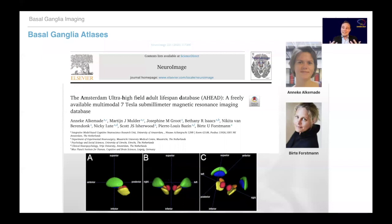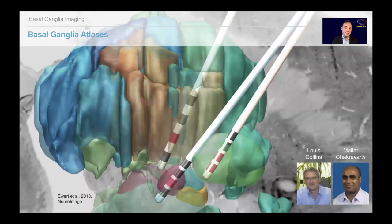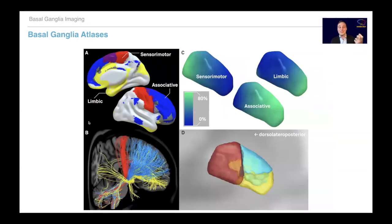Atlases and atlas resources are yet another way to study the basal ganglia. Since we cannot image them precisely in vivo, we can use atlas resources to define them. The team by Bita Forstmann pioneered this approach. We also created an atlas as part of LeadDBS together with Louis Collins and Malachi Cravati from the MNI, which includes histological sections and subthalamic nucleus subdivisions based on tractography, trying to best define the basal ganglia as a whole.